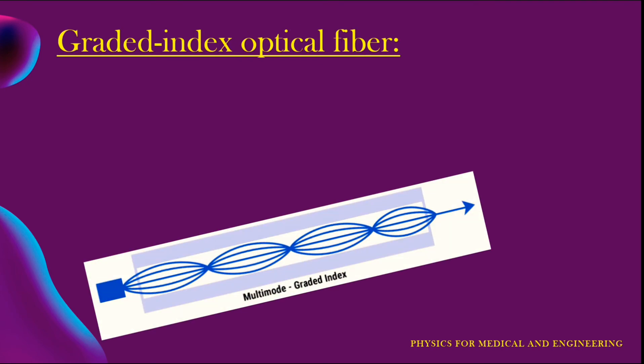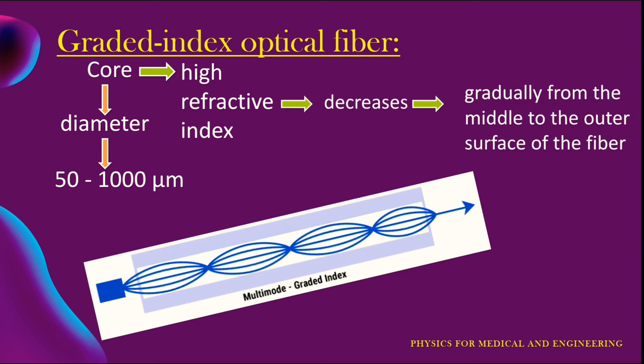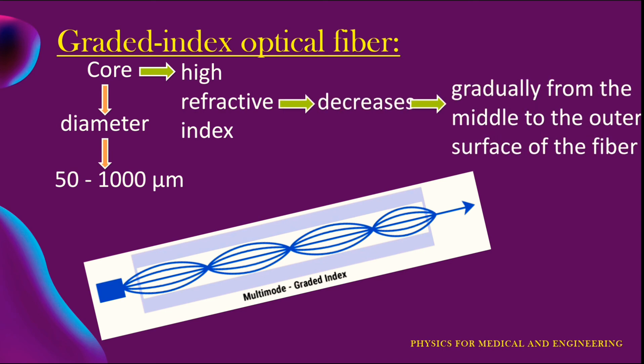The next one is multi-mode graded index optical fiber. Multi-mode graded index fiber has a core which ranges in diameter from 50 to 1000 micrometer. It has a core of relatively high refractive index and the refractive index decreases gradually from the middle to the outer surface of the fiber. There is no noticeable boundary between core and cladding.